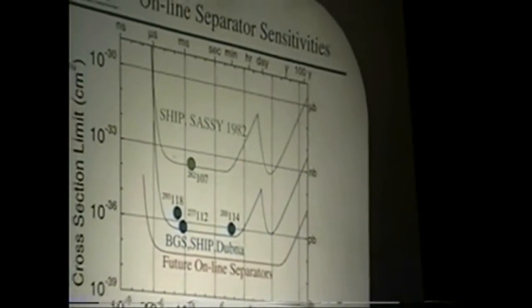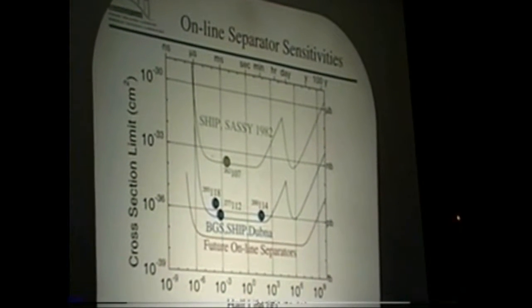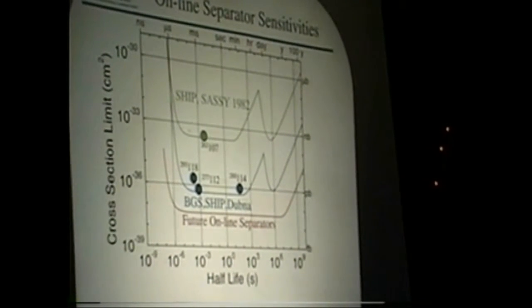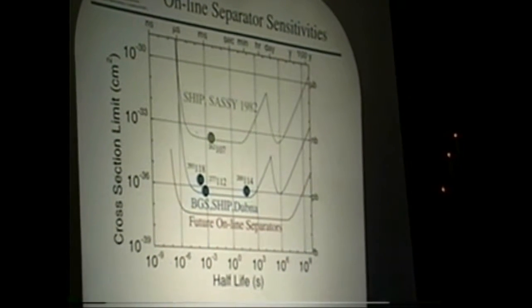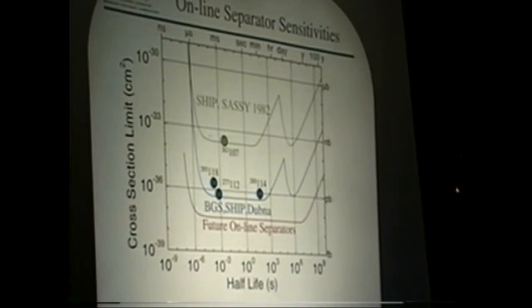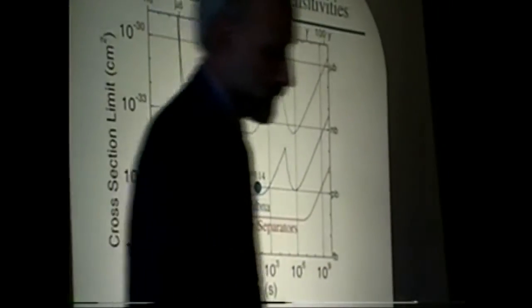The first part will be about online separators. This is part of the curve that Matthias already showed. This is how I'm measuring sensitivity. Two of the main things we're working against are cross sections, which are related to production rates for these heavy elements, and the half-life. As it gets shorter, it becomes more difficult. But there are things at the long half-life end that makes things more difficult also.